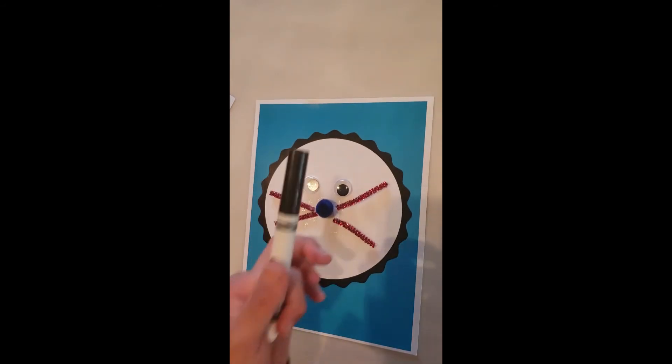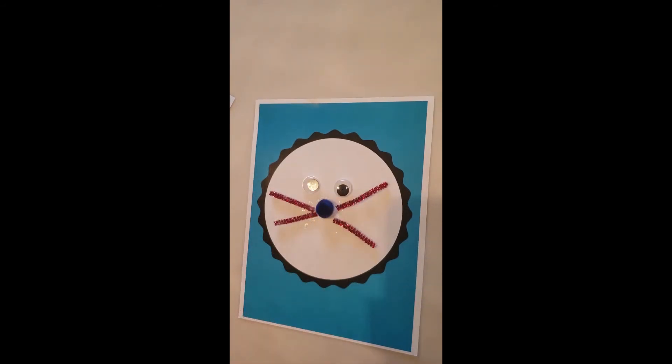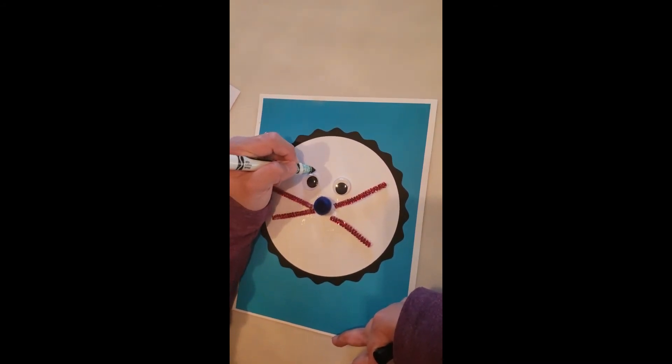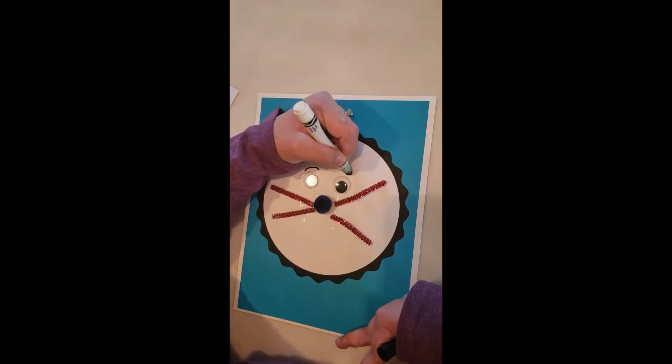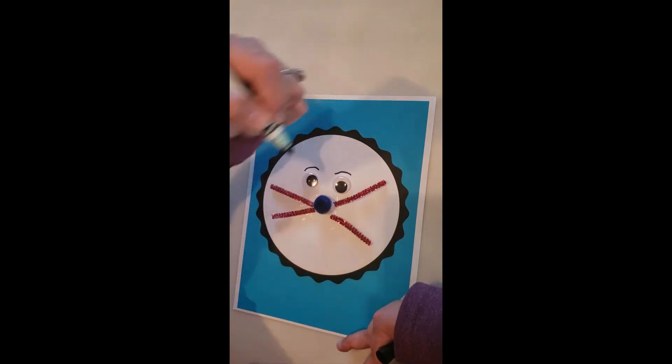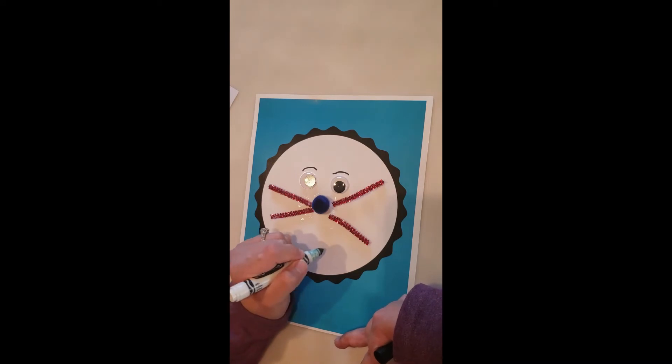All right, so then you're going to grab your marker and you are going to draw his eyebrows, so just a little line, a little hump right above his eyes. And then you're going to draw his mouth.